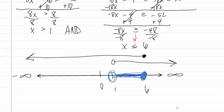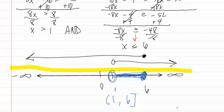Now we write our interval notation. We use a parenthesis for the open dot, one, comma, six, and a bracket for the closed dot. This is our answer. Remember, when doing AND inequalities, you are looking for the area that is between or overlapping — that makes both inequalities true.